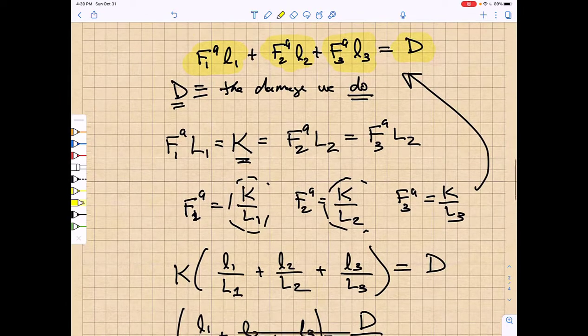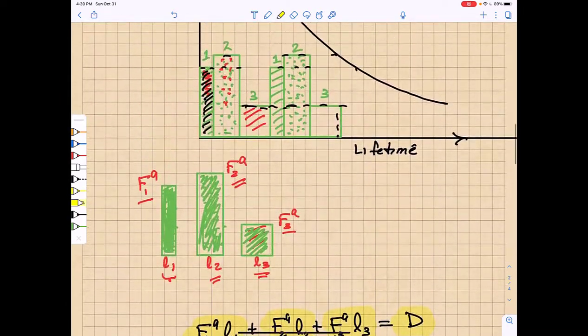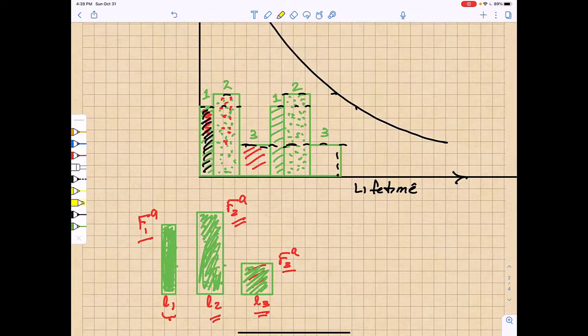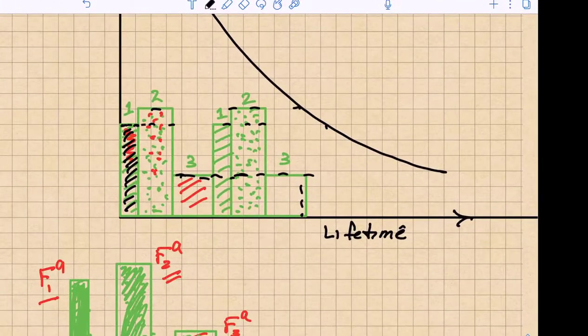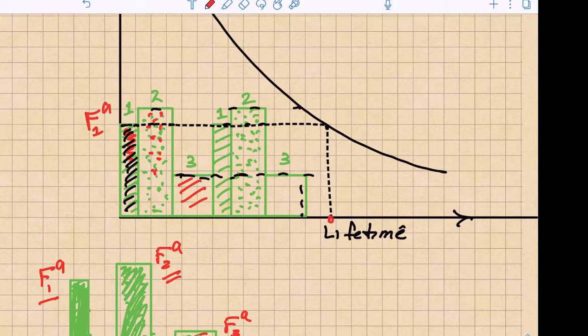So what we know immediately is that each of these little load rectangles, if you look carefully, will have an associated intercept with this 90% reliability curve that will give us the relationship between F1 to the a power and the lifetime, L1. That's the 90% reliability lifetime.